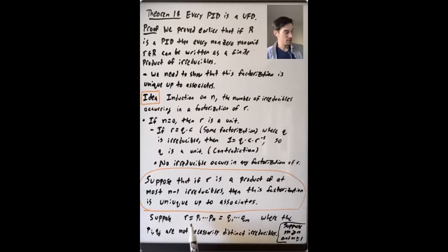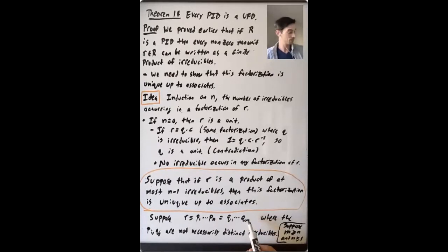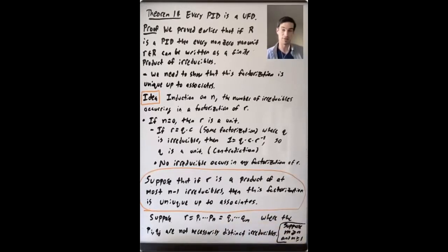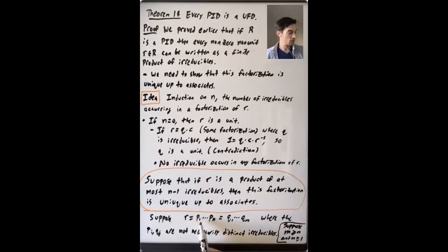We're going to suppose that r is a product of n irreducibles p1 through pn (not necessarily distinct), and also a product of m irreducibles q1 through qm (also not necessarily distinct irreducibles). We suppose m is greater than or equal to n; if not, we switch them. Our induction hypothesis tells us something about r that can be written as a product of at most n minus one irreducibles.